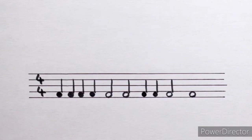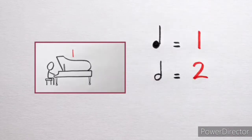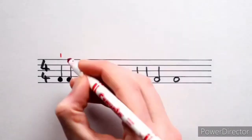Before we do anything else let's figure out how many counts each of these notes have. In the last video we learned that all crotchets have one count, all minims have two counts, and all semibreves have four counts.